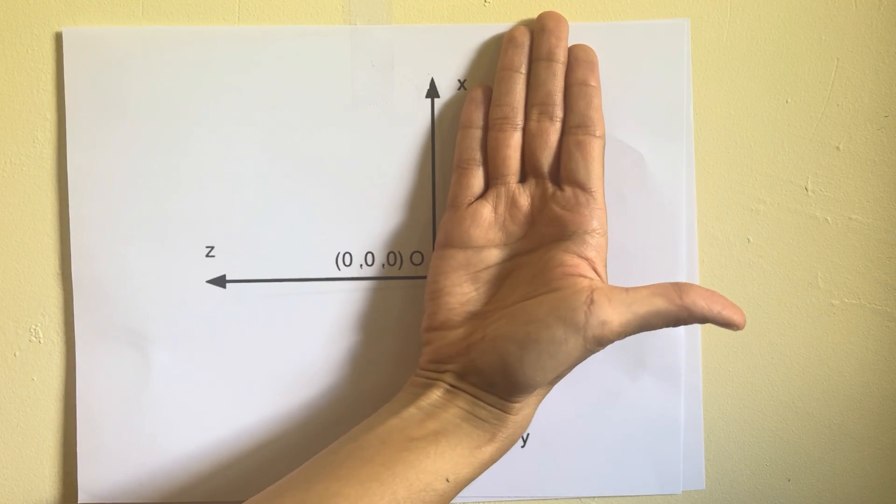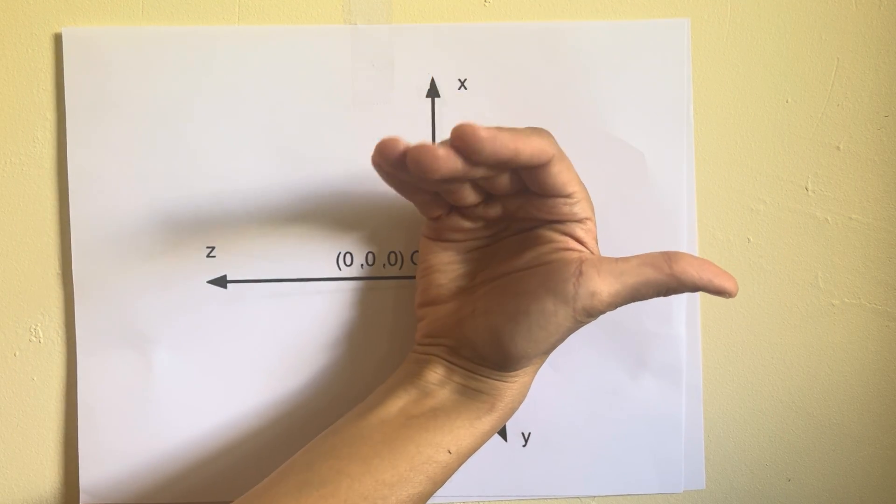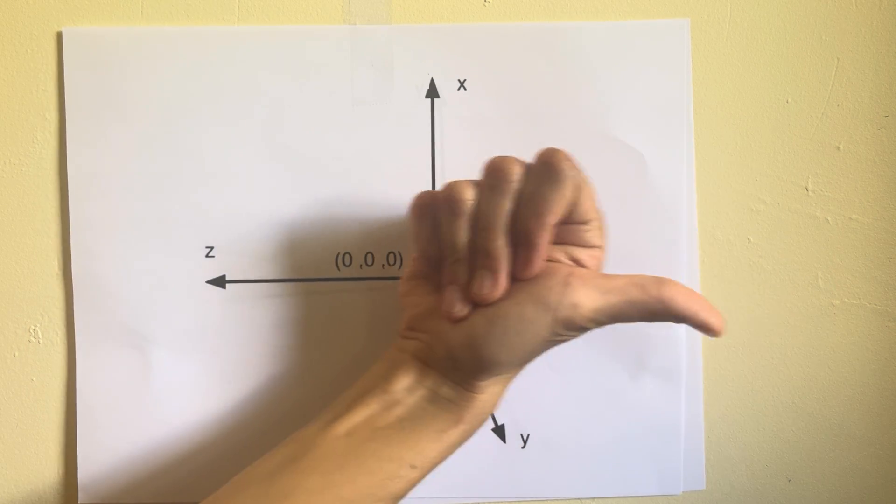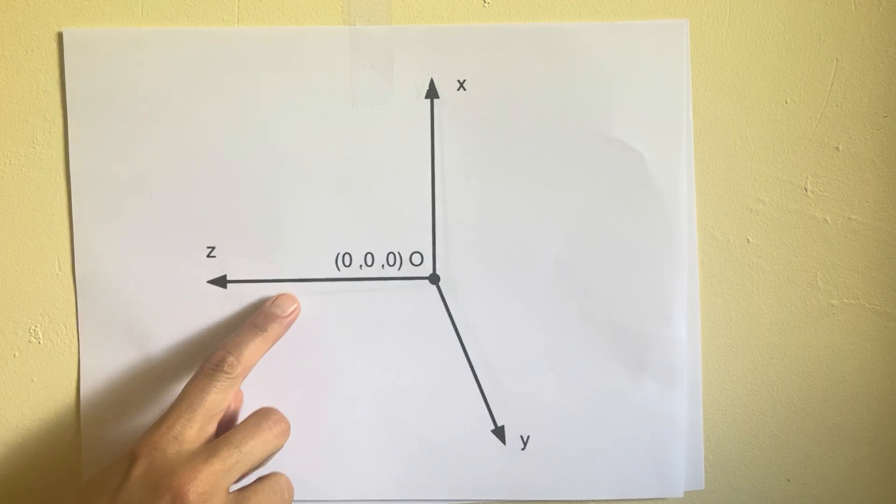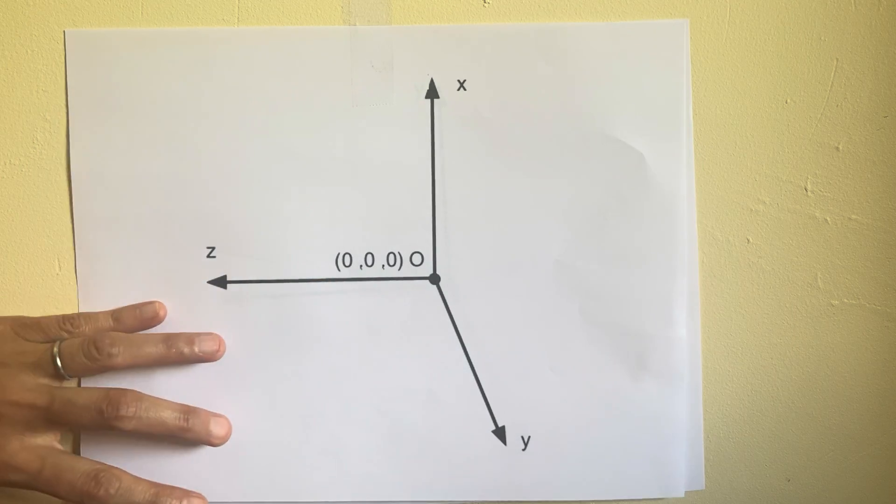Then when I fold plus x into plus y, now my thumb is pointing in the negative z direction. That means that this is in fact a left-handed coordinate system, not right-handed.